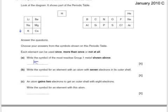Write the symbol for an element with 7 electrons in the outer shell. Well, it's going to be in group 7 — counting across the groups — so it's going to be either oxygen or sulfur. Let's go for oxygen. And there are our possible answers.